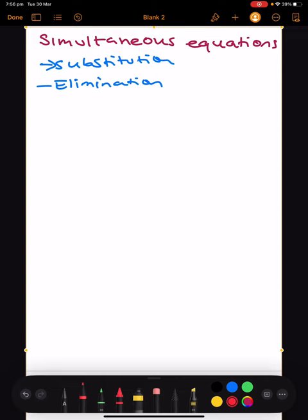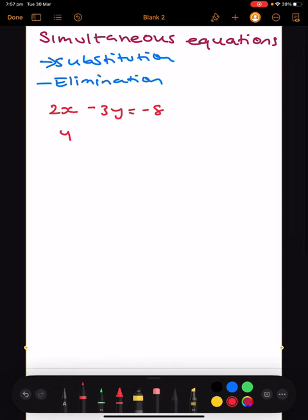In order to solve an equation, say we have 2x - 3y = -8, and we have y = x + 3. We're asked to solve this. What you would do is call the first equation 1 and the second equation 2.